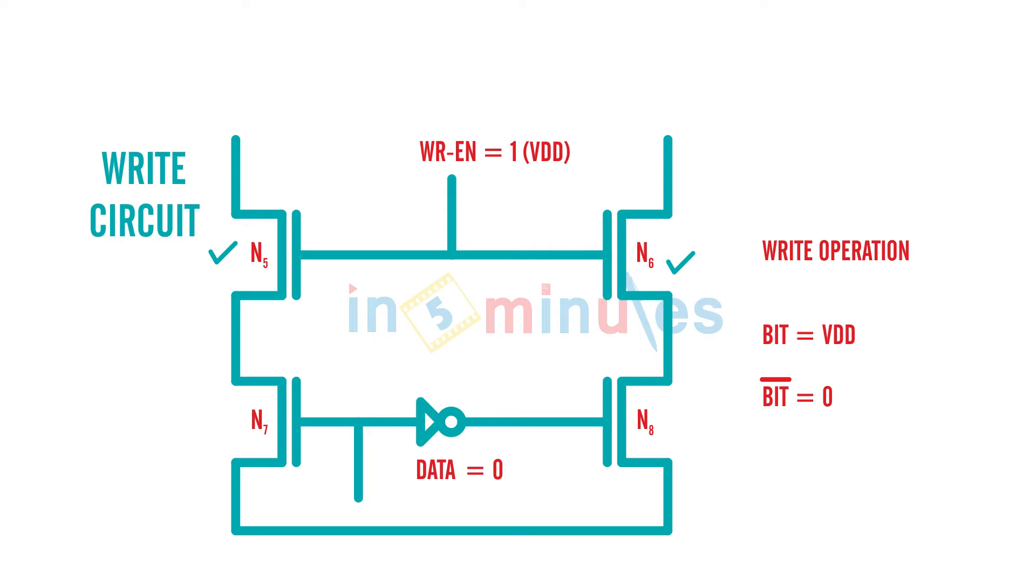When my data equals zero, this zero goes to N7, so N7 transistor turns off. This zero is given at the input of the inverter, so the output of the inverter is logic one and this will turn on N8.